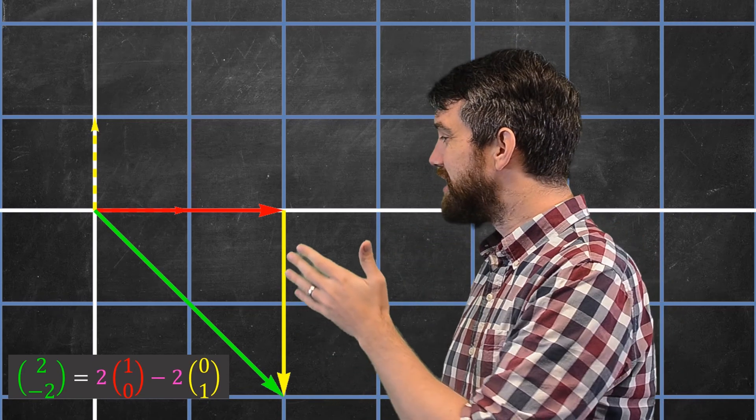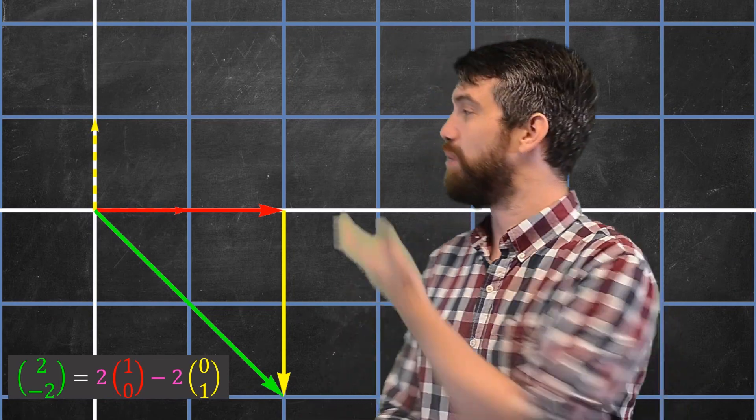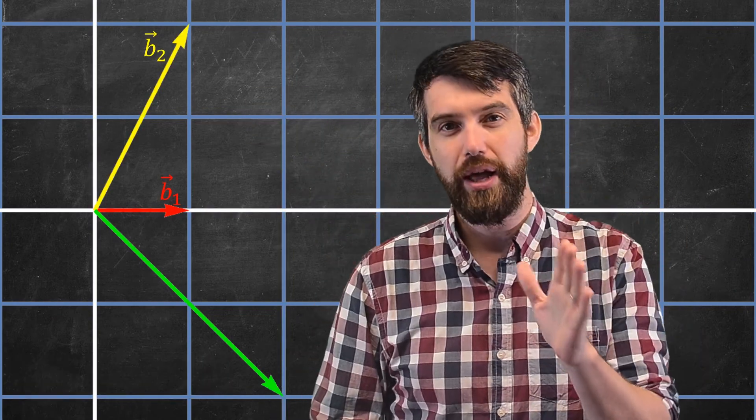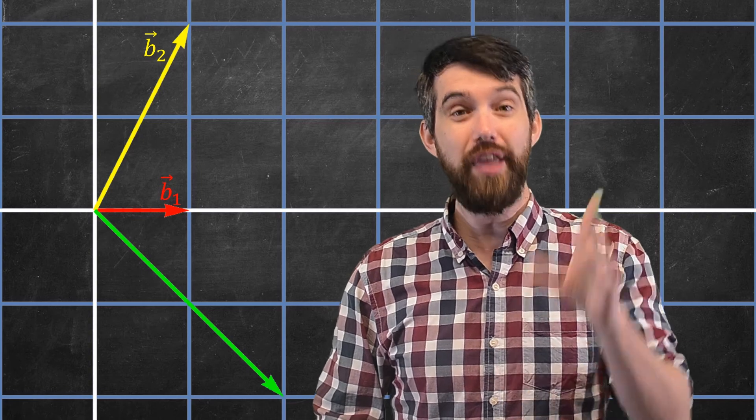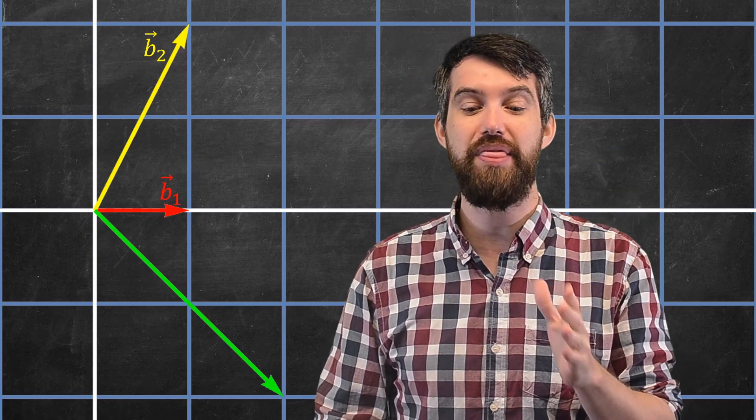So imagine instead of the standard basis vectors, that I had some other pair of basis vectors. How about this one, the b1 and the b2 that have been moved around a little bit. Now, the b1 and the b2, they are still a basis, and you'll remember that a basis meant this.